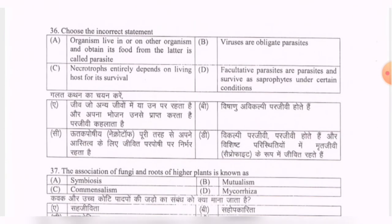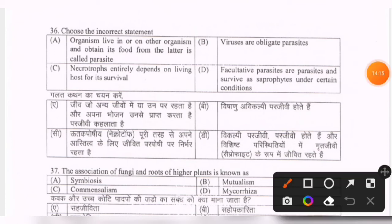Next question: choose the incorrect statement — organism living in or on another organism and obtaining food from it is called a parasite; viruses are obligate parasites; necrotrophs entirely depend on living host for survival; facultative parasites are parasites and survive as saprophytes under certain conditions. The correct options for this question are both C and D.